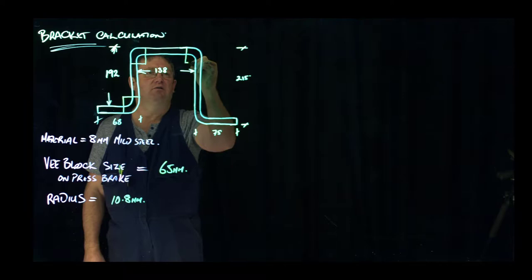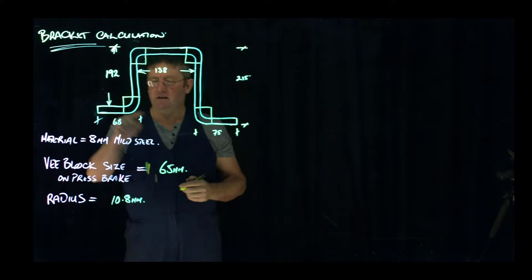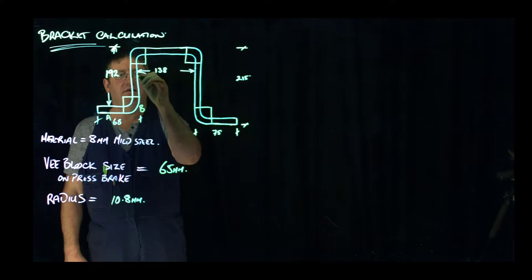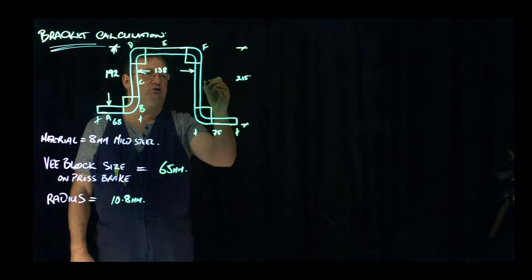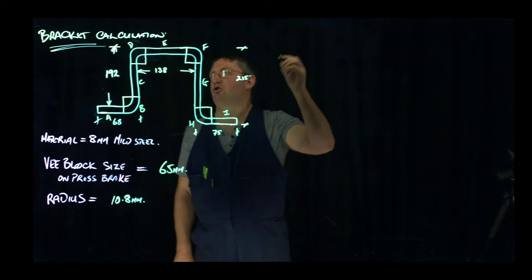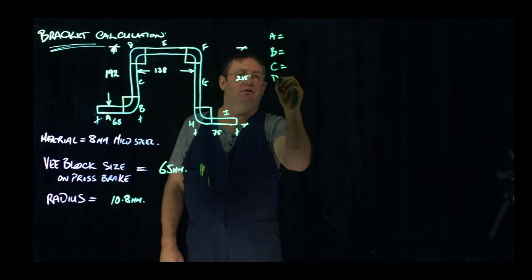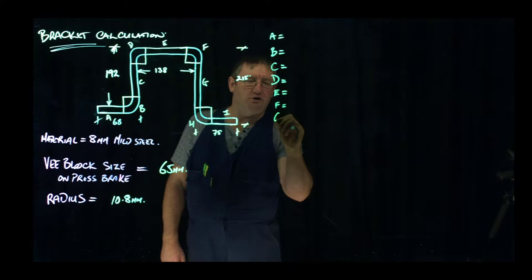So you can see very clearly I've got those pieces. So this straight I'm going to call A, this bend is B, this straight is C, bend D, straight E, bend F, straight G, bend H, and straight I. So we want to determine all the lengths of those. So A equals, F, G, H, and I. So we're going to work out the length for all of those.